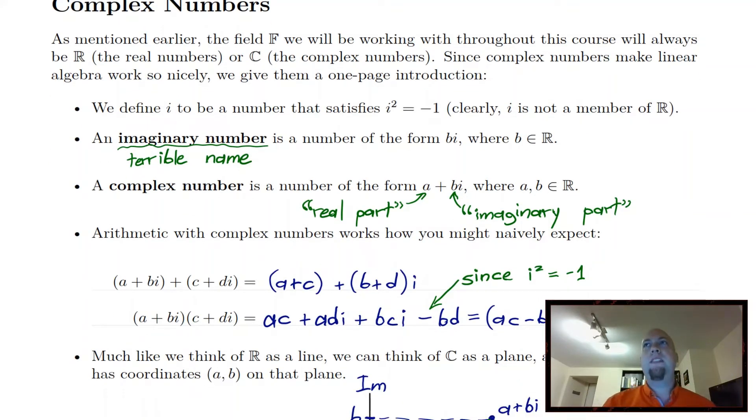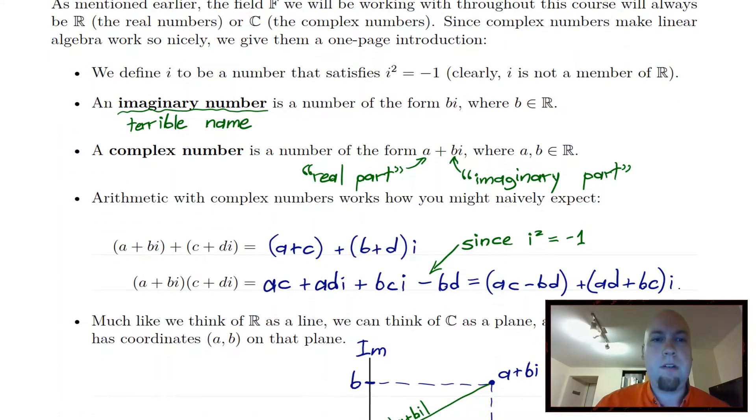And what types of properties do you get when you add this new thing to the set of numbers? Well, first off, any number that's a real scalar multiple of i, we're going to call that an imaginary number and don't focus on the name. It's a name from a long, long time ago that stuck. I mean, they're just as real as real numbers, but they're called imaginary numbers.